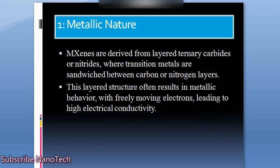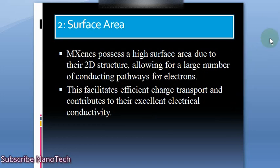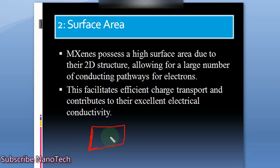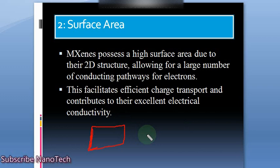The second important reason is surface area. MXene has a higher surface area because it is a two-dimensional material — like a sheet. Just as graphene, extracted from graphite, is a two-dimensional material with high electrical conductivity, MXene is also a two-dimensional nanomaterial that possesses a higher surface area. If a material has higher surface area, its dimensions lie in the nanometer scale.